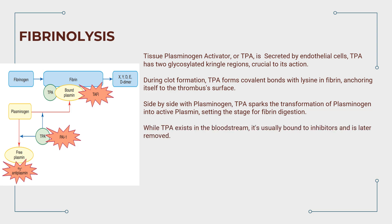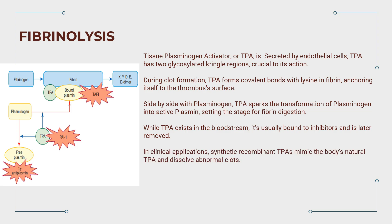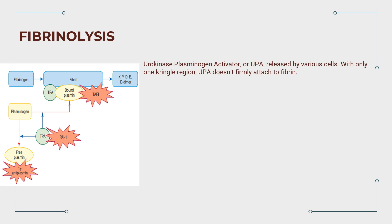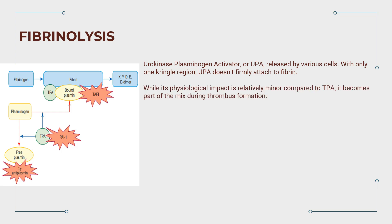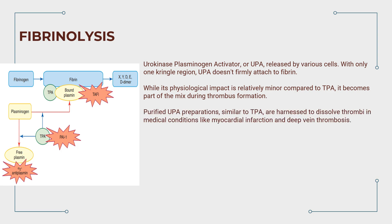While TPA exists in the bloodstream, it's usually bound to inhibitors and is later removed. In clinical applications, synthetic recombinant TPAs mimic the body's natural TPA and dissolve abnormal clots. Urokinase plasminogen activator, UPA, is released by various cells and with only one kringle region, doesn't firmly attach to fibrin. Purified UPA preparations are harnessed to dissolve thrombi in medical conditions like myocardial infarction and deep vein thrombosis.